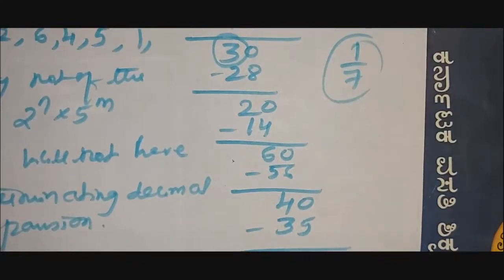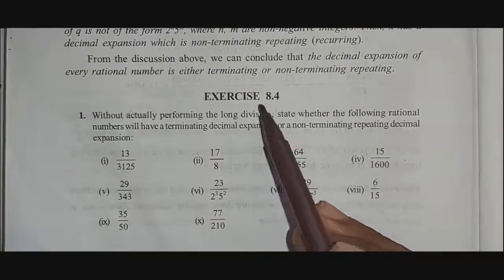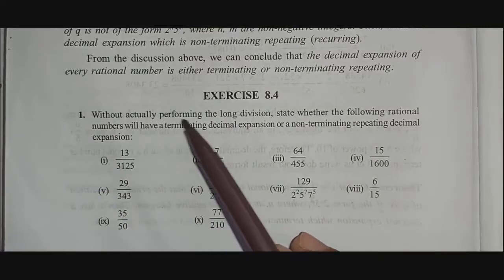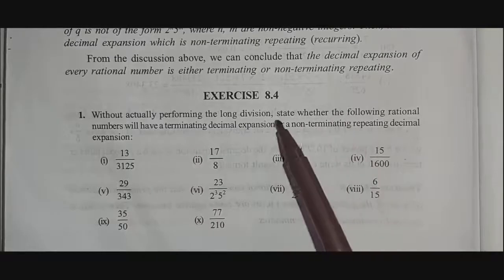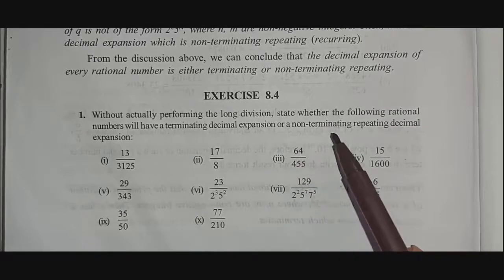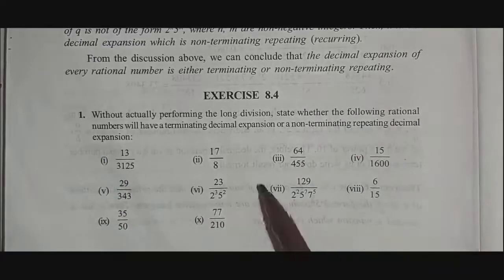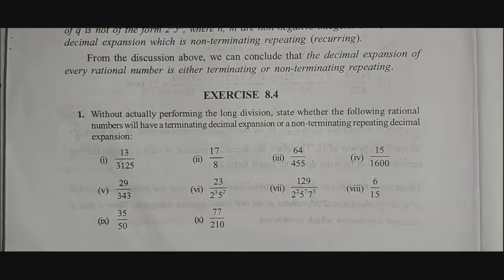Now let us discuss Exercise 8.4 on real numbers. The first main question asks: without actually performing the long division, state whether the following rational numbers will have a terminating decimal expansion or a non-terminating repeating decimal expansion. The rule is: if the denominator is in the form 2^n × 5^m, it terminates; otherwise it is non-terminating repeating.